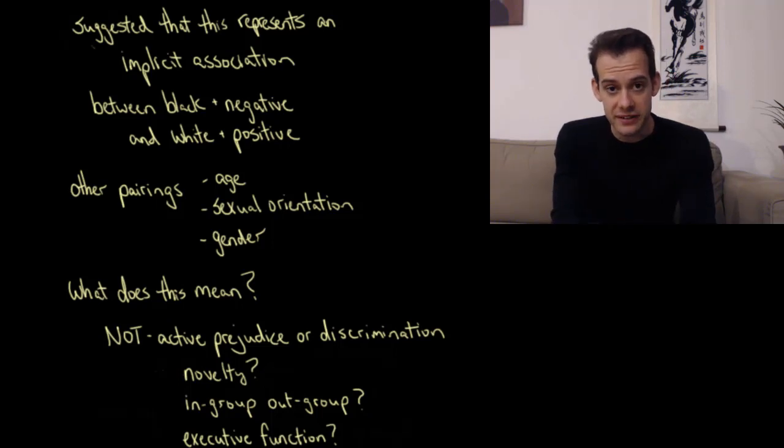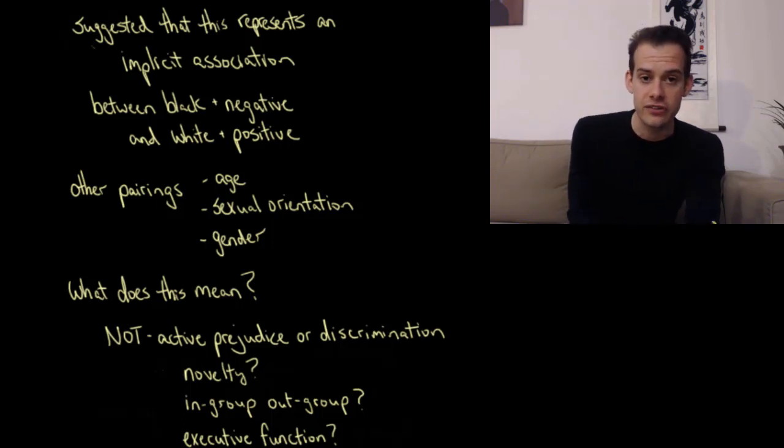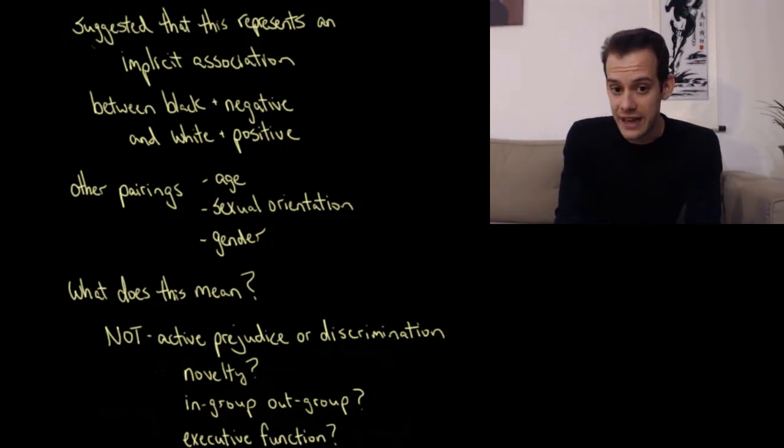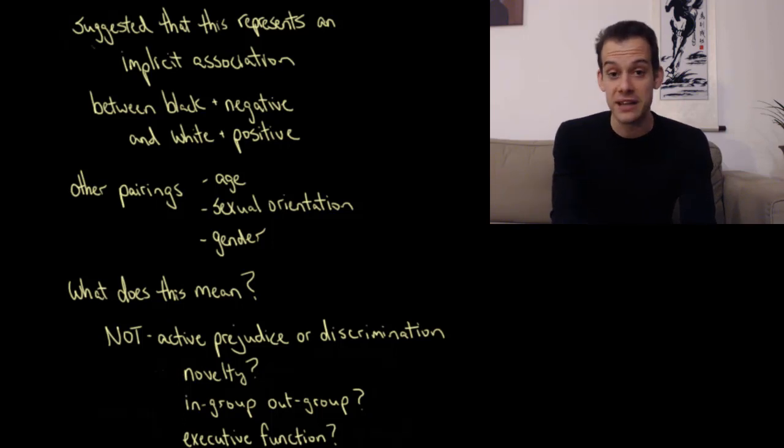And if you go to the Project Implicit website, you can try this test yourself. You can also try a number of different versions of the test with other types of pairings. So there's pairings related to age, related to sexual orientation, related to gender, and you can see if you have some implicit associations between certain pairings here. And if you're interested in learning more about this, you can go to the Project Implicit website, and you can read the research by Anthony Greenwald and Mazarin Banaji. And they also wrote a book about this topic called Blind Spot, which I'll post a link to in the video description.